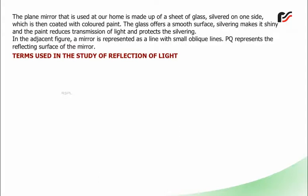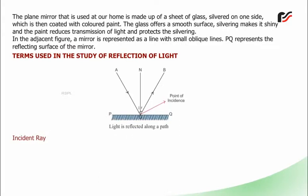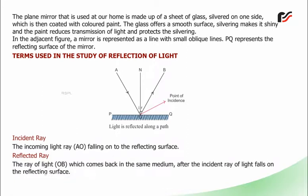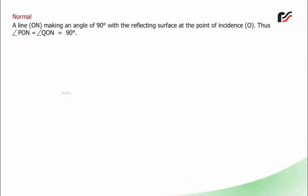Terms used in the study of reflection of light: Incident ray: The incoming light ray, AO, falling onto the reflecting surface. Reflected ray: The ray of light, OB, which comes back in the same medium after the incident ray of light falls on the reflecting surface. Normal: A line, ON, making an angle of 90 degrees with the reflecting surface at the point of incidence, O.